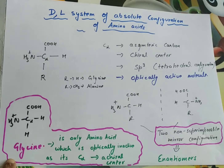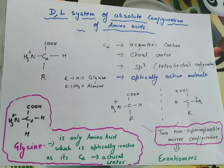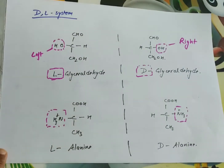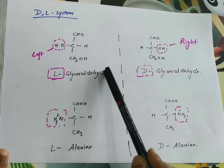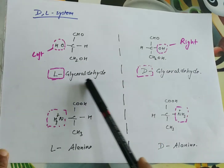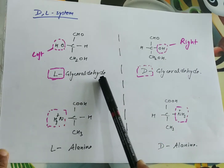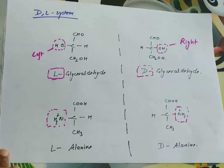Glycine is an exception — it cannot be written in two different forms because its C-alpha is not a chiral center. Now let's see the DL system. The DL system of amino acids is based on the absolute configuration of the three-carbon sugar called glyceraldehyde. Amino acids are named on the basis of glyceraldehyde's absolute configuration.